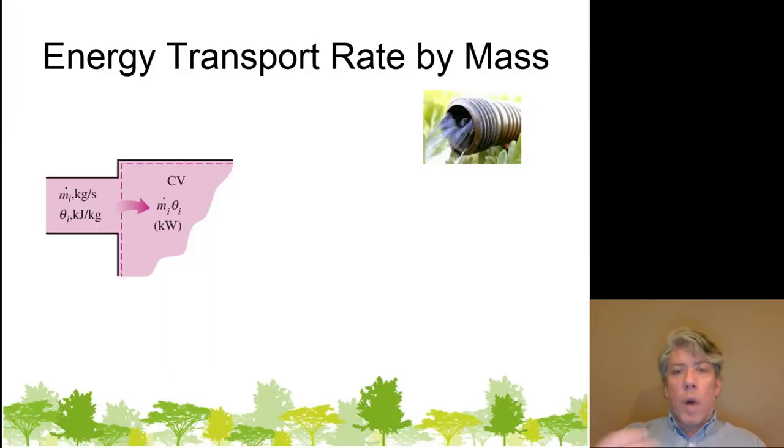So, now we can quantify the energy transport rate by mass. If you have mass flowing into a control volume, it is carrying energy with it. It's carrying four kinds. It's carrying potential energy. It's carrying kinetic energy, because it's flowing. It's carrying thermal energy. And it's carrying flow energy, because it's going into a pressurized container. And, of course, we usually combine the thermal and the flow energy into enthalpy, but putting them all together, we just call it theta.